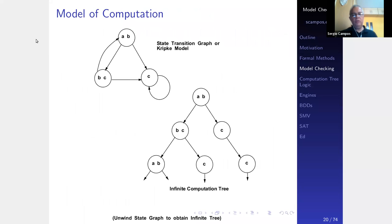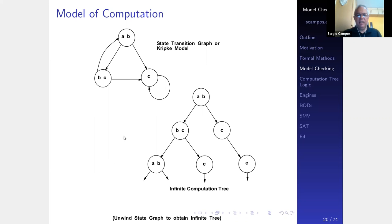The model of computation uses a state transition graph. Suppose the initial state has A true, B true, C false. You can move to a state where A and B are false and C is true, or to a state where A is false, B is true, C is true, and move back and forth. If you hold this graph by the initial state and shake it, it unrolls into an infinite computation tree containing all possible paths. We use this computation tree for reasoning about properties.